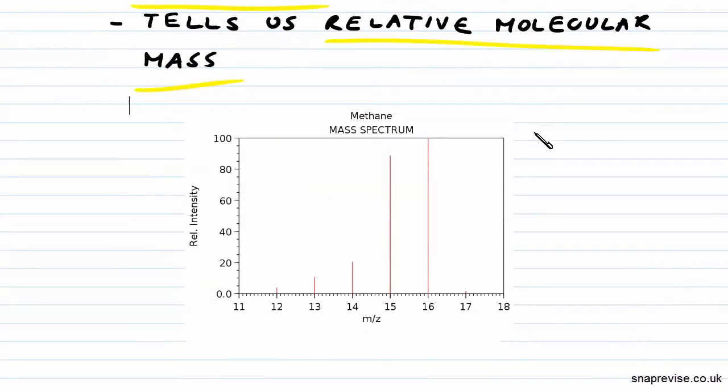So looking at the mass spectra of methane here, we know methane has a formula of CH4, and when ionized it will form CH4+. So the molecular ion is CH4+, and you can see that the furthest to the right, the highest peak over here, which you can see at 16,